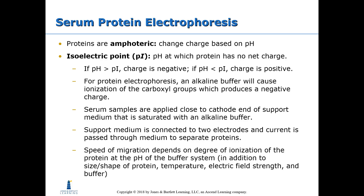For protein electrophoresis, an alkaline buffer — meaning a base with a higher pH — causes the ionization of the carboxyl groups (COOH) of the amino acid structure, producing a negative charge. Placing the protein in an alkaline buffer increases the pH of the environment, causing that protein to have a negative charge.